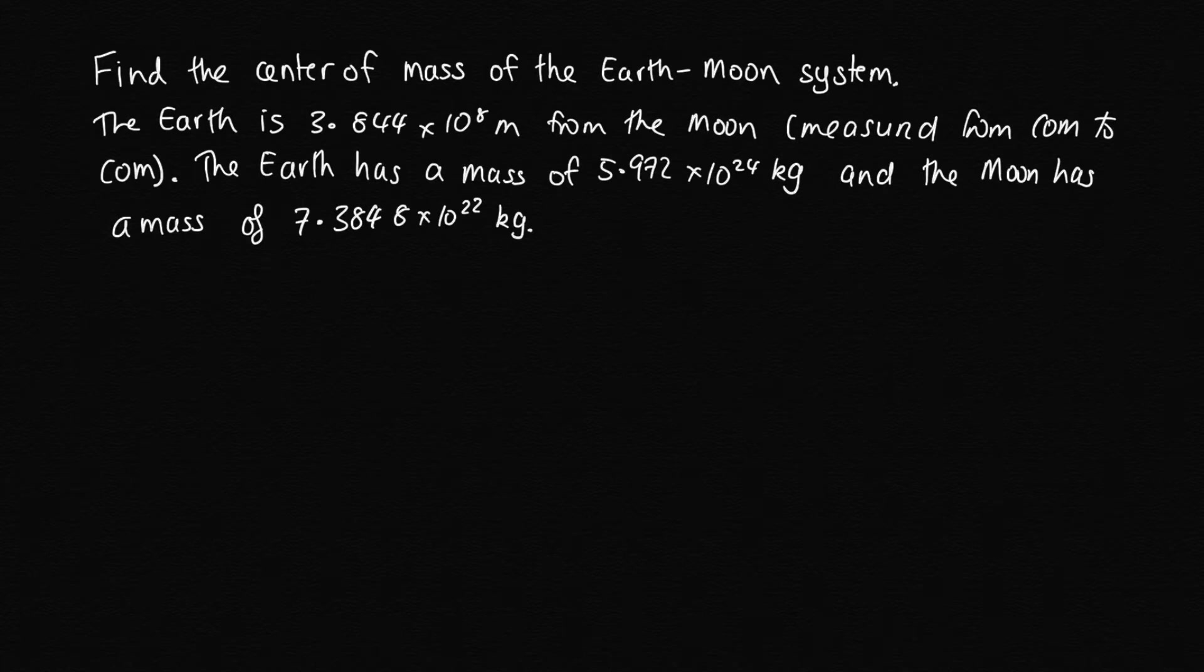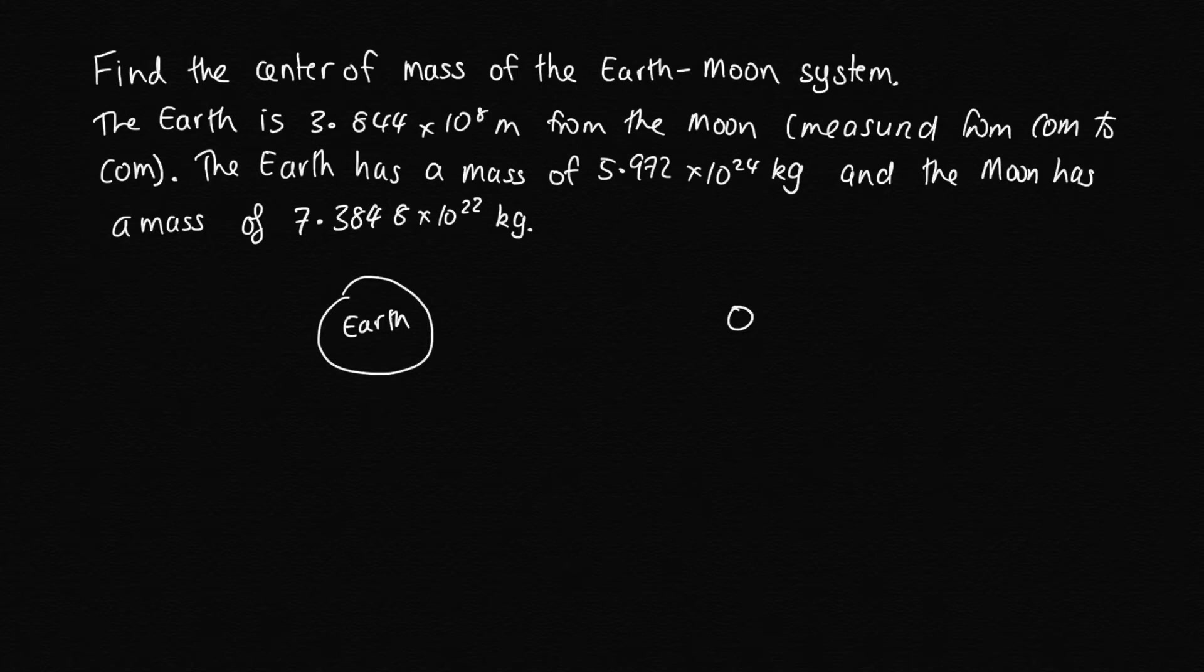In order to solve this, this is a one-dimensional case because here we've got our Earth, here we've got a Moon. It's useful to start by drawing a diagram. Let's measure x from the center of the Earth. Let's put this as x equals zero.